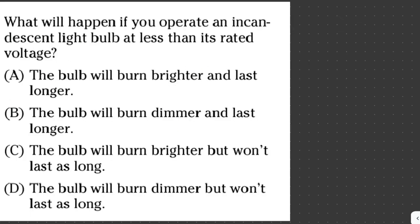What will happen if you operate an incandescent light bulb at less than its rated voltage? A, the bulb will burn brighter and last longer. B, the bulb will burn dimmer and last longer. C, the bulb will burn brighter but won't last as long. D, the bulb will burn dimmer but won't last as long. Since it operates at less than its rated voltage, the bulb will burn dimmer because its full potential isn't used and it will last longer for the same reason. So the answer here is letter B.